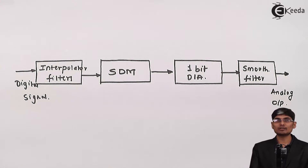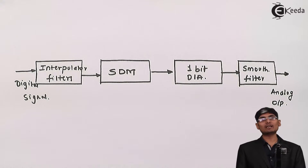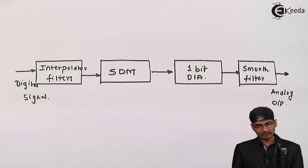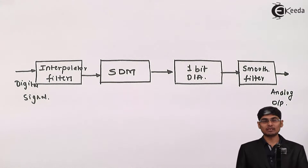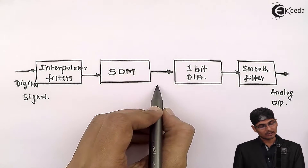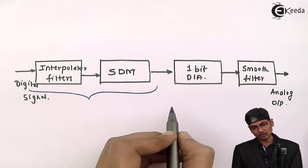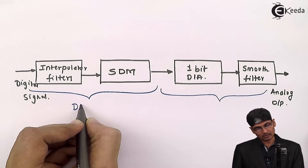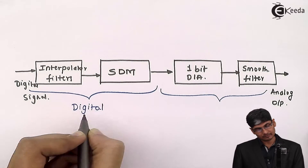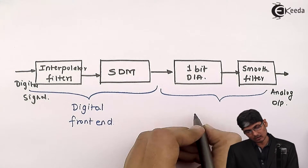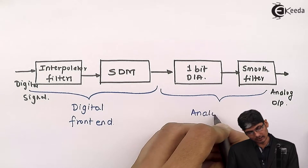Hi friends, today we are going to see what you mean by oversampling D2A converters. This is a block diagram of an oversampling D2A converter. It consists of two sections: one we called the digital frontend and one we called the analog frontend.